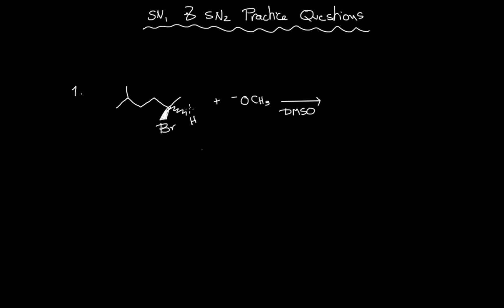Hi, this is Dr. Hayek and today we will practice SN1 and SN2 mechanisms. Let's first start with this example where we have this alkyl halide. As you can see, it's a second degree alkyl halide, and the nucleophile is the methoxide, which means it's a strong nucleophile from the fact that it's negatively charged.